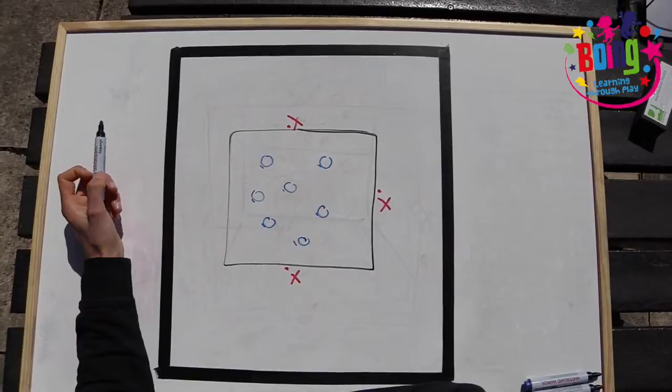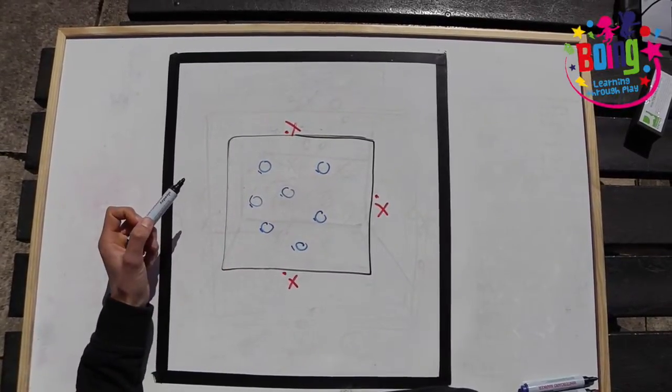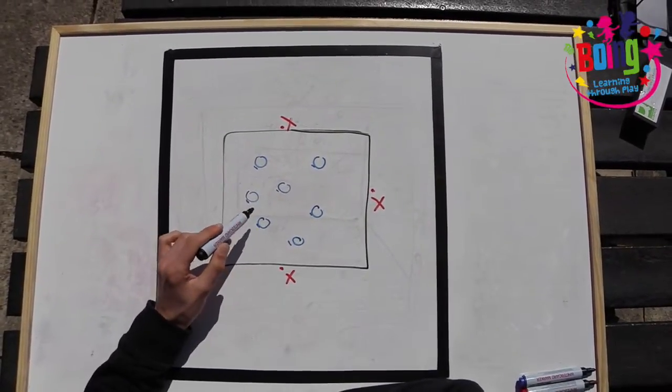On the word go, the throwers must attempt to hit the dodgers with their ball, but they cannot go inside the square. The dodgers must try and dodge these balls.